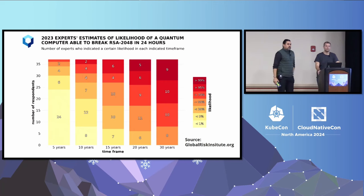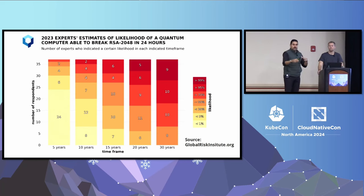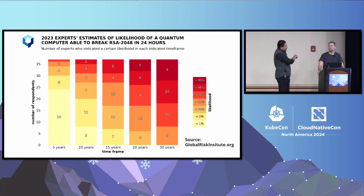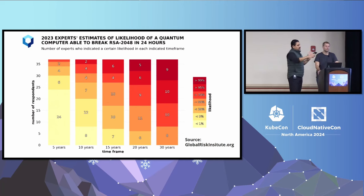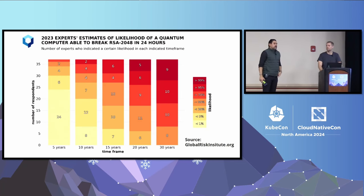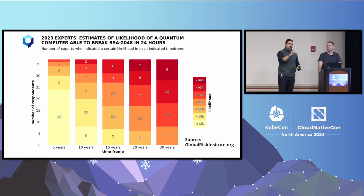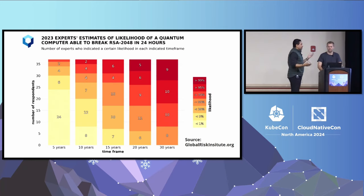If you ask experts when 'Q-day' is — the day when quantum computers are large enough to threaten the encryption we use today — there are various answers. This graph from the Global Risk Institute shows it's definitely within the next 30 years, and it's getting closer. We have a team at IBM in Zurich that tracks this, and every time we ask them, their estimate keeps getting closer and closer. I can't reveal the number, but it's getting scarier.